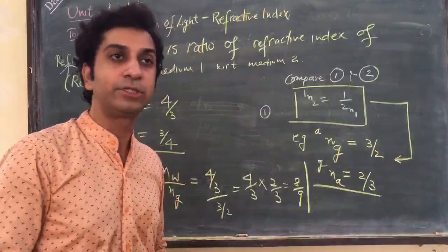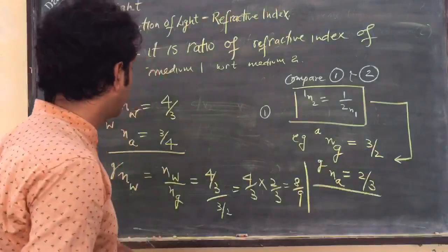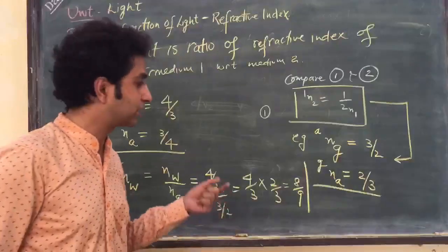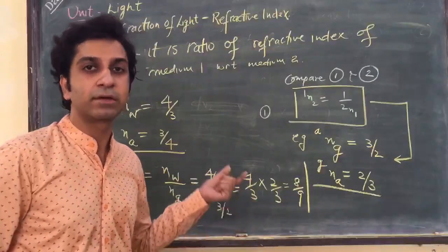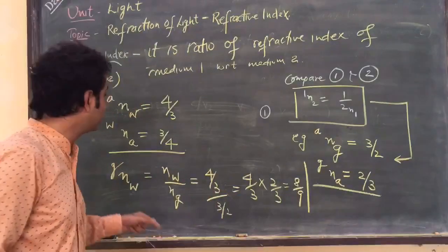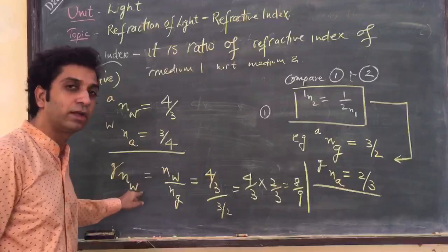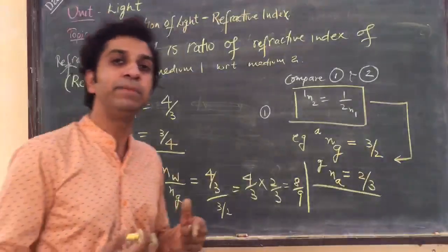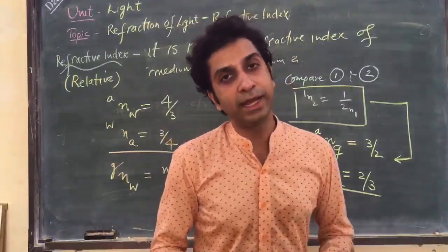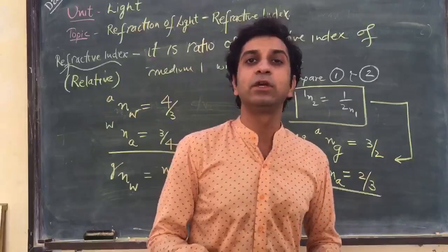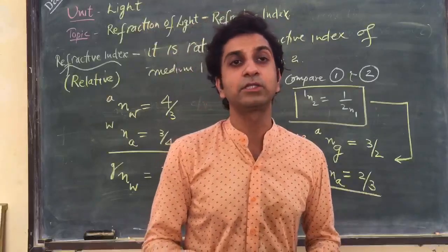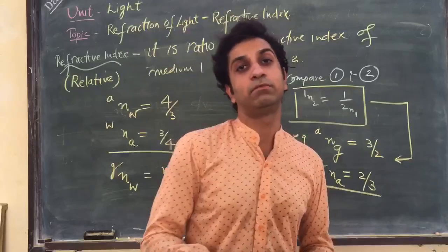Such types of questions are quite important for one-mark MCQ questions in final board exams. These types of calculations may not be in your NCERT books but you should practice them. You need to focus on how to write the formula correctly as per the symbols and the mediums. In my next lecture I will correlate the significance of relative and absolute refractive index with denser and rarer mediums. Thank you.